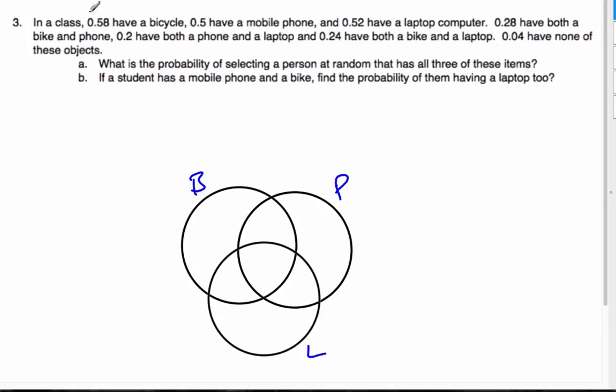With these Venn diagrams, when I'm given percentages or probabilities, I always change them to counts so it makes it easier for me to understand what's going on. So I'm going to make this 58 people, 50 mobile phones, 52 computers, and so on. When I read this, four have none of these objects, so that is outside.